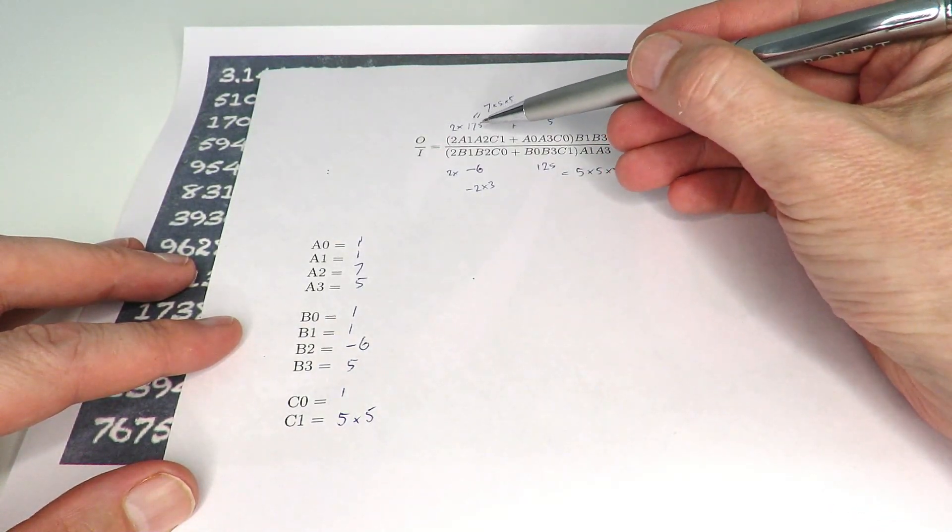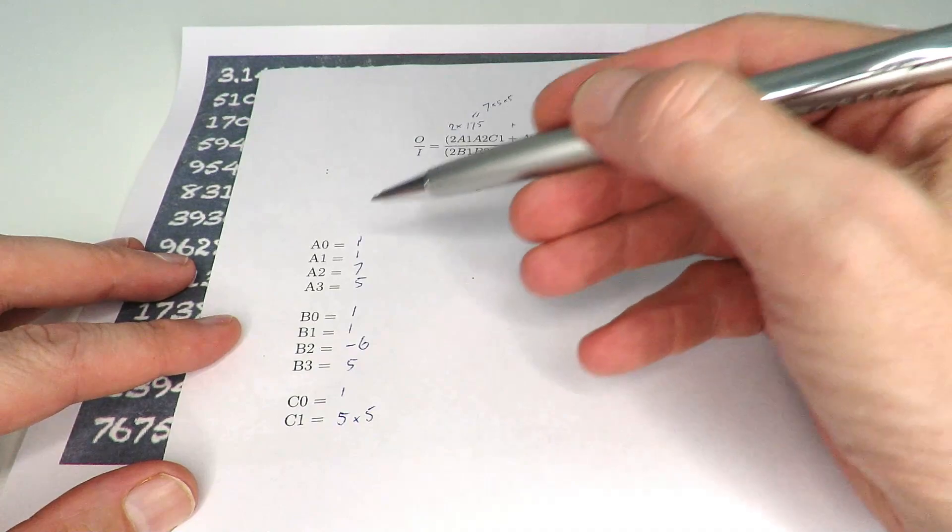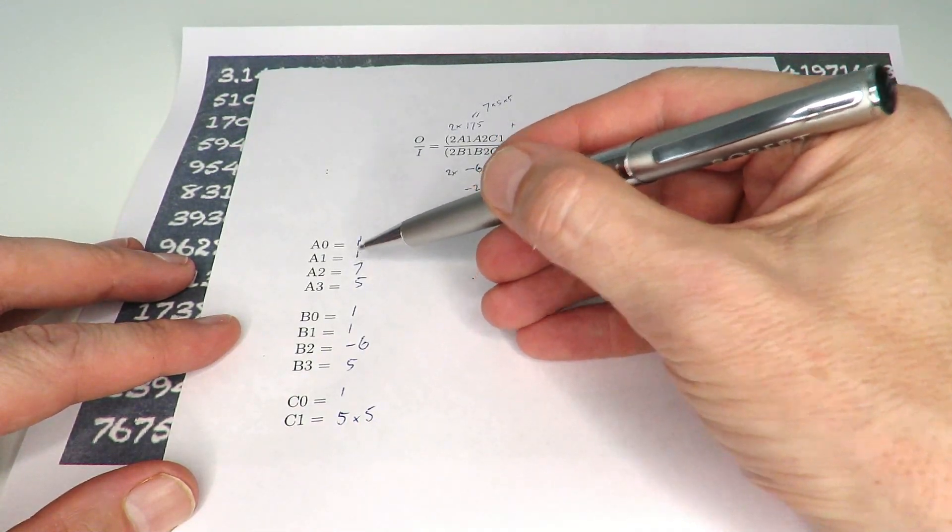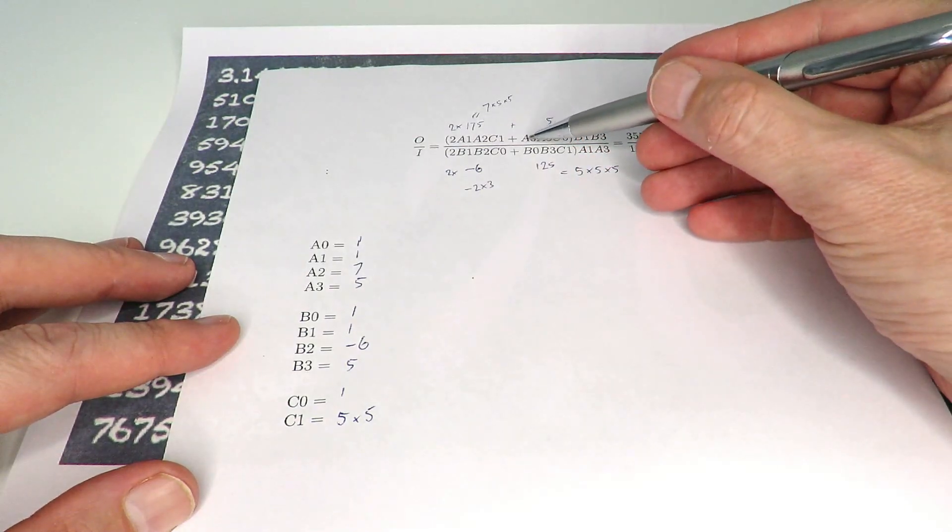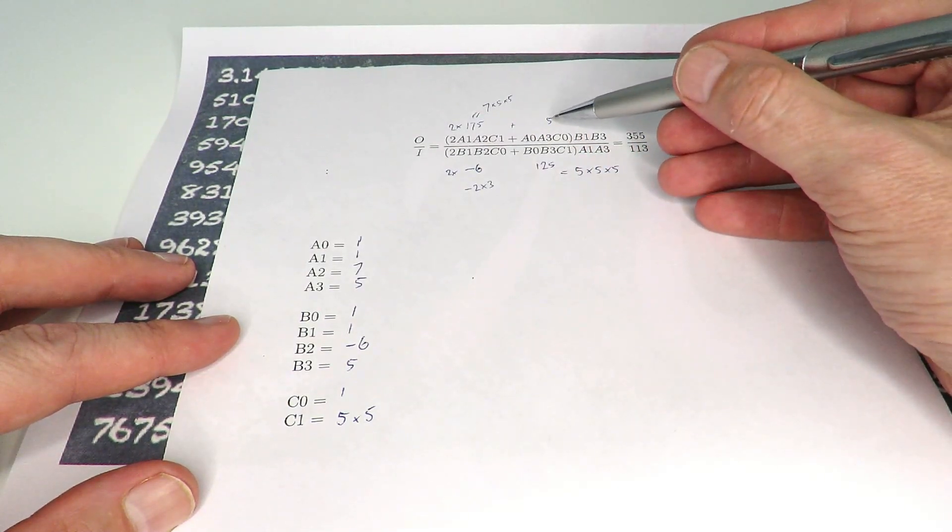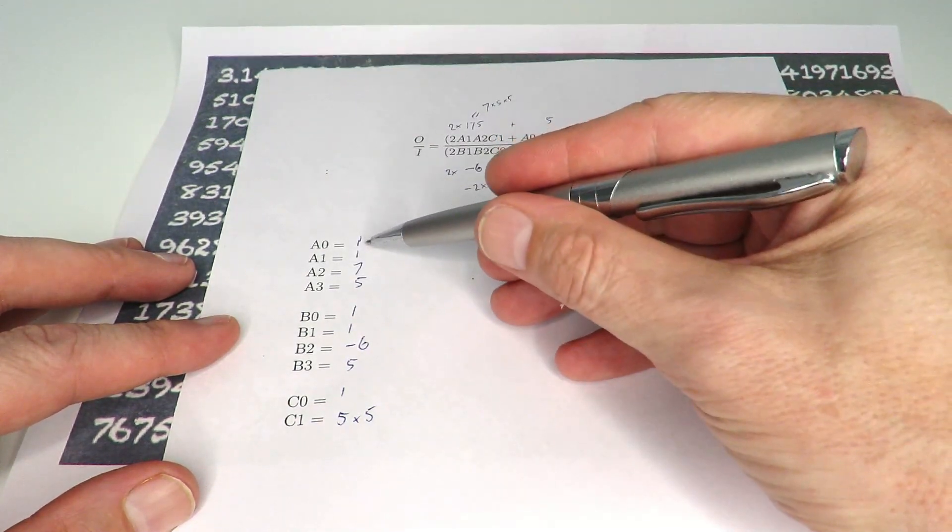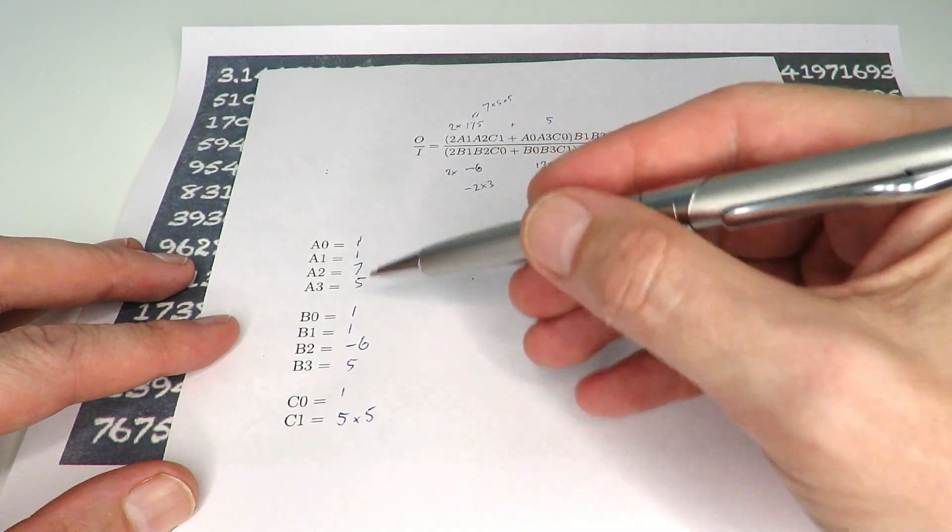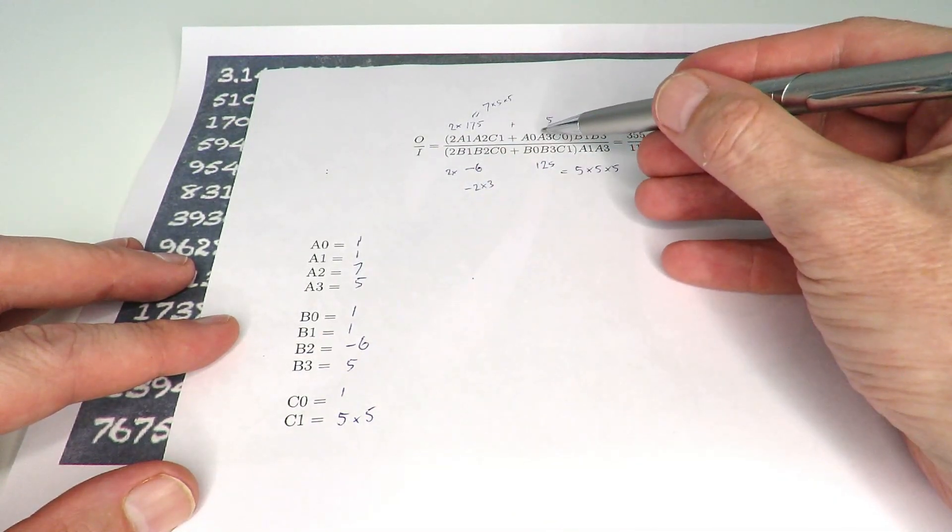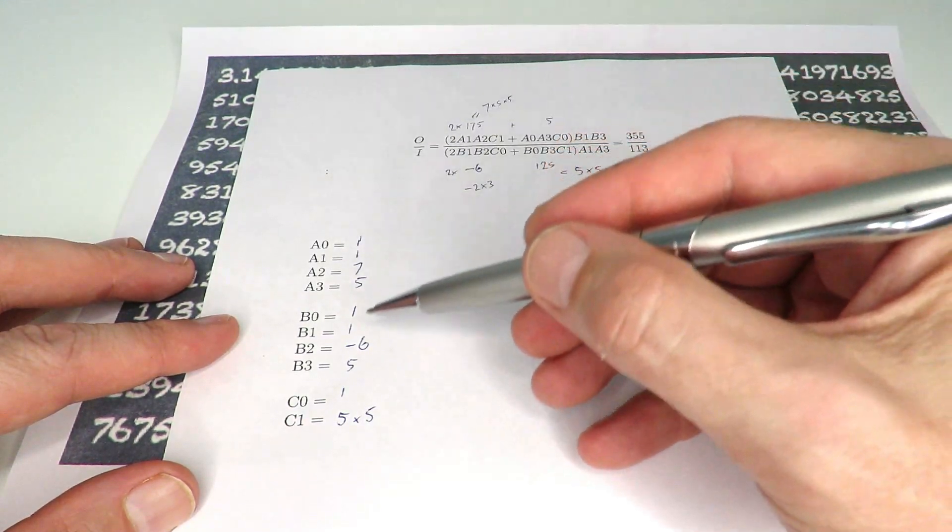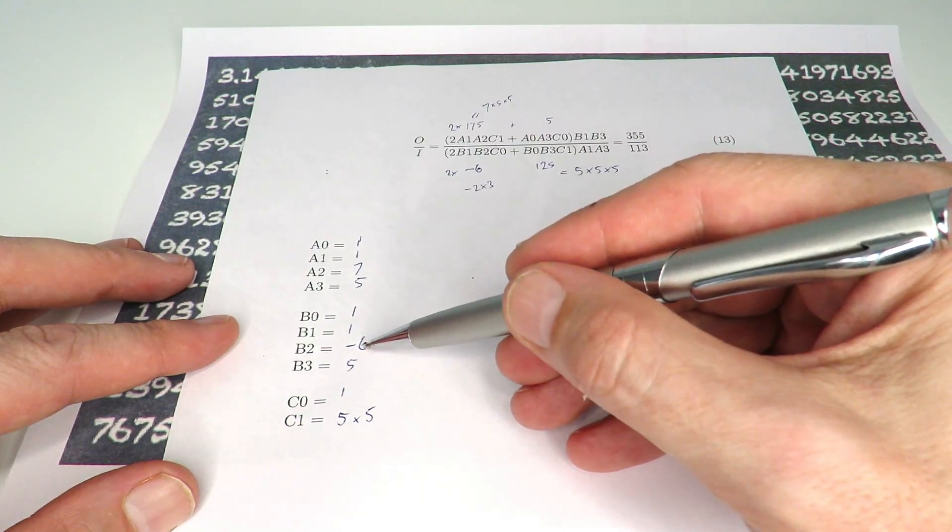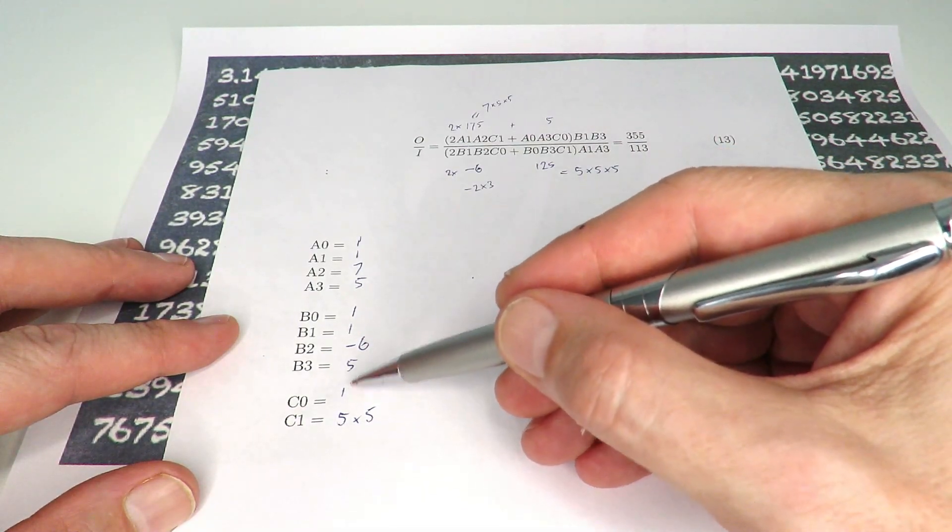So we put these numbers back in here, you'll find that for example 175, which is a1 times a1 times a2 times c1—just checking that, so we've got 1 times 7 times 5 times 5, which is equal to 175. We've got a0, a3, c0 having to be equal to 5, so we've got 1 times 5 times 1, that's 5, that checks out. B1, b2, c0 have to be minus 6, so we've got b1 is 1, b2 is already minus 6, and then c0 is 1, so that is correct as well.